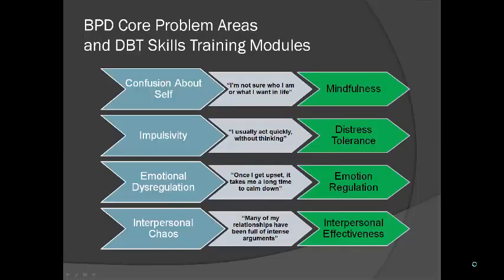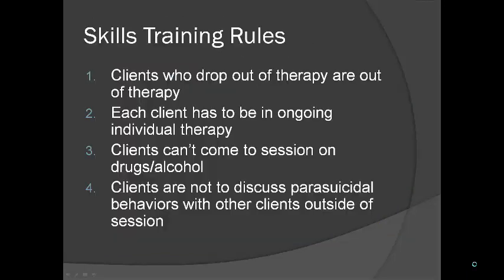There are four main areas targeted in the skills training module: mindfulness, distress tolerance, emotion regulation, and interpersonal effectiveness. These target four different problem areas. For confusion about oneself — 'I'm not sure who I am or what I want in life' — you use mindfulness techniques. For impulsivity — 'I usually act quickly without thinking' — you use distress tolerance techniques. For difficulty calming down — 'once I get upset it takes me a long time to calm down' — you use emotion regulation techniques. For interpersonal chaos — 'many of my relationships have been full of intense arguments' — you use interpersonal effectiveness techniques.